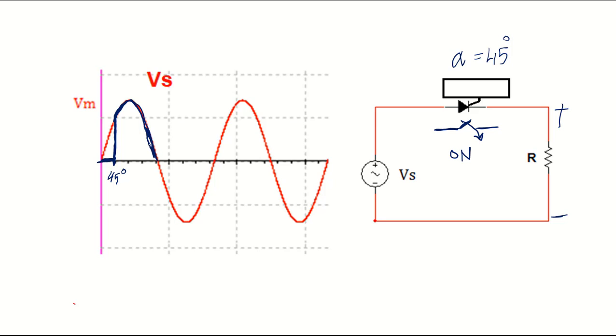Until the thyristor becomes reversed biased. When the thyristor becomes reversed biased, at this point exactly, it stops conducting. This point here is called the extinction angle. It is 180 degrees.